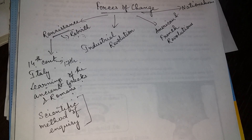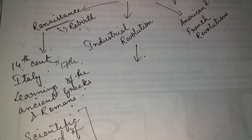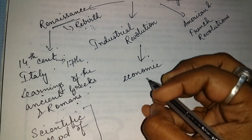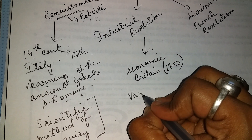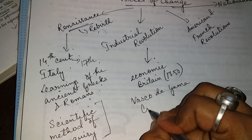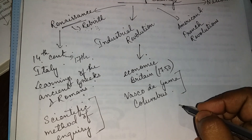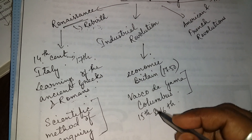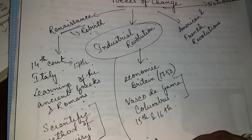Next comes the Industrial Revolution, which was totally an economic revolution. It started in Britain around the 1750s. Here we also note some explorers like Vasco da Gama and Columbus, who discovered the sea route to the East and to the Americas, and this happened during the 15th and 16th century.